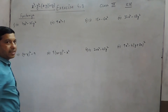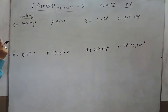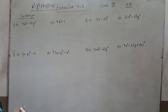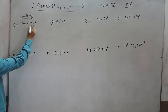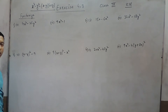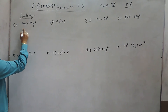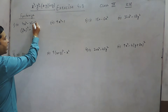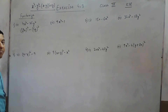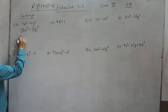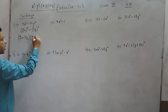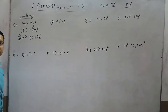This is one identity where if there are two perfect squares with a negative sign in between, then we can easily factorize them as x minus y and x plus y. In this question it is 4x square minus 25y square. 4x square is a perfect square of 2x and 25y square is a perfect square of 5y. So this can be written as 2x minus 5y as one factor and 2x plus 5y as another factor.